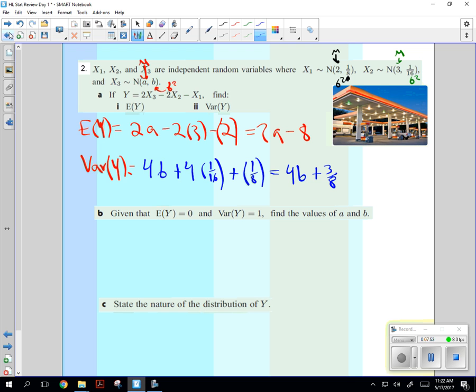So, E of Y is 0. That's equal to 2A minus 8. So, A is equal to 4. And then, for this one, we'll have variance is equal to 1, 4B plus 3 eighths. Have a great day. So, then you're going to get 4B is equal to 8 eighths minus 3 eighths is 5 eighths. Divide by 4 is 5/32nds. It's A and B. State the nature of distribution. What distribution has an expected value of 0 and the variance of 1? Well, they call it the normal distribution.